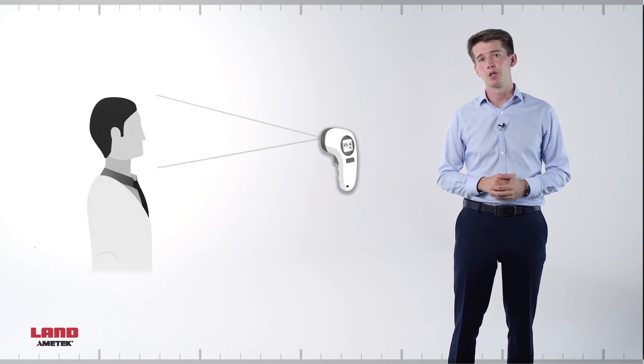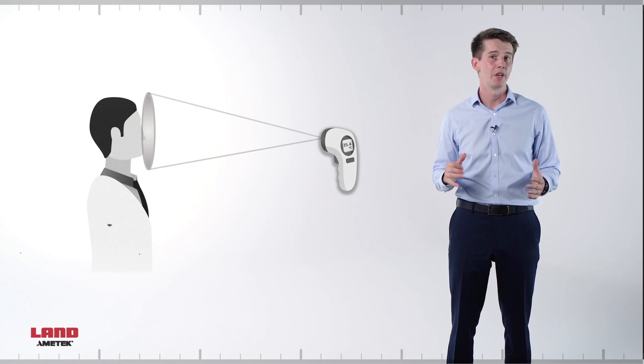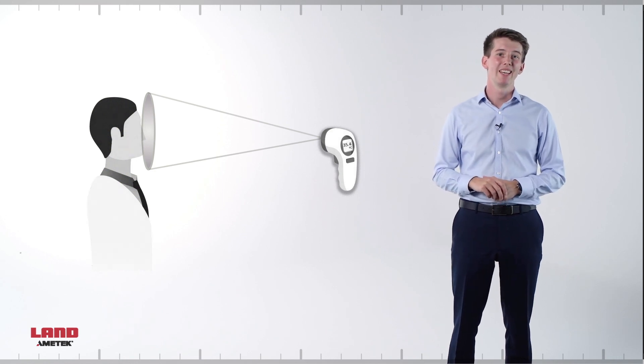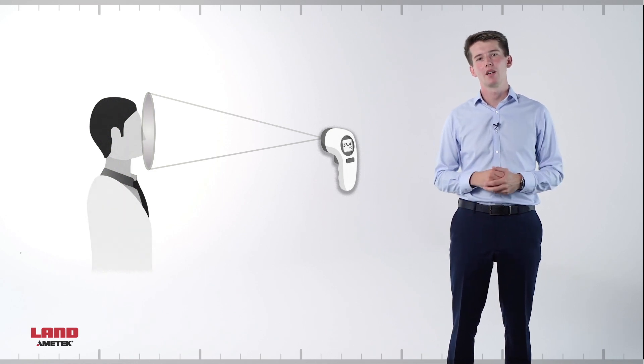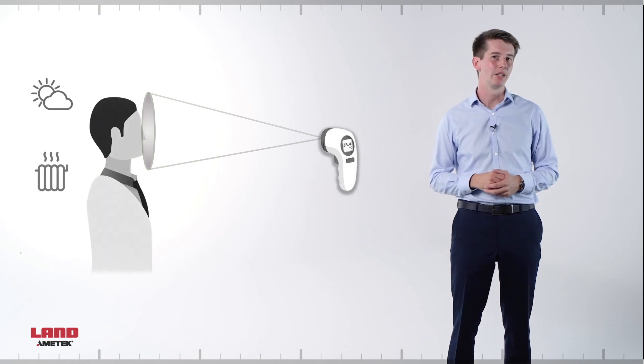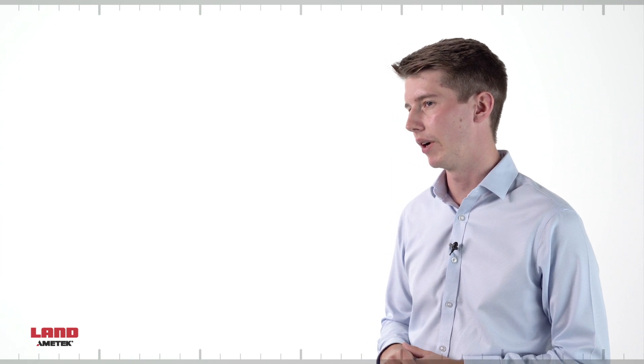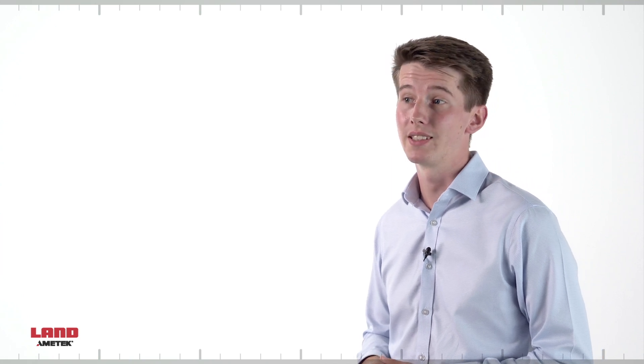Non-contact thermometers often have a large measuring spot. They provide an average measurement across the person's face even when used up close. Additionally, the measurement might include some background temperature. The accuracy of this measurement is further affected by the operator who may not hold the device in the same angle each and every time since they must adjust to measure different people. The issue is magnified between shifts and multiple operators.